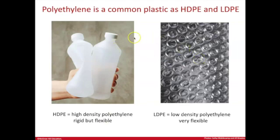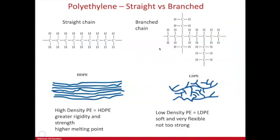That has to do with varying these at the molecular level, but not at the monomer level. The variation in polyethylene can be straight versus branched — the monomers can be bonded one at a time to form a straight chain polymer.